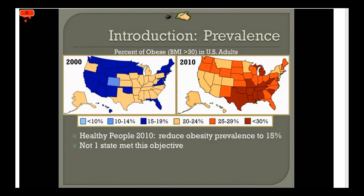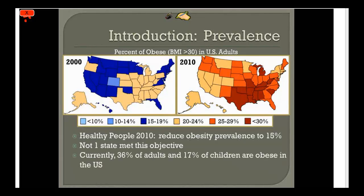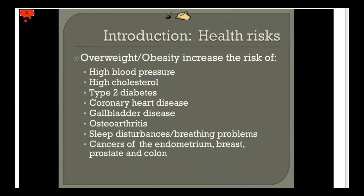Looking at 2010, not one state met the objective, and in fact all but one state increased in the prevalence of obesity. In 2010, most states were at 25% and up. Currently, 36% of adults are obese and 17% of children are obese in the U.S. This has major financial implications — it relates to $147 billion in medical costs each year, so it's something we all need to engage with.